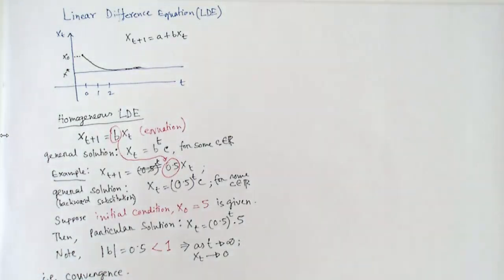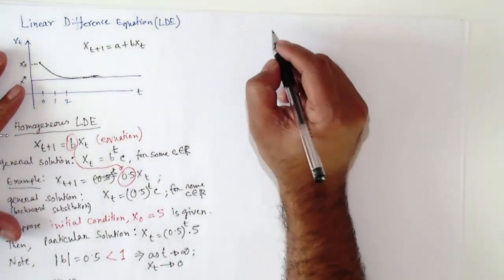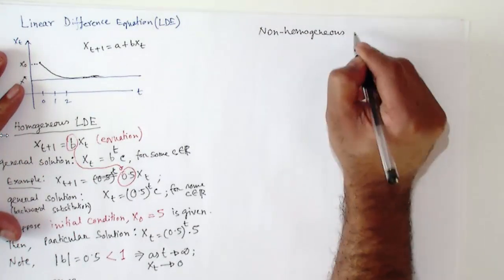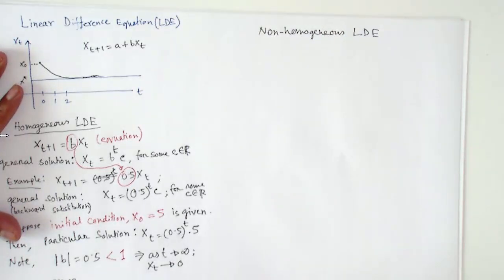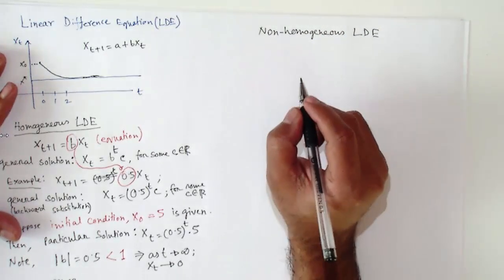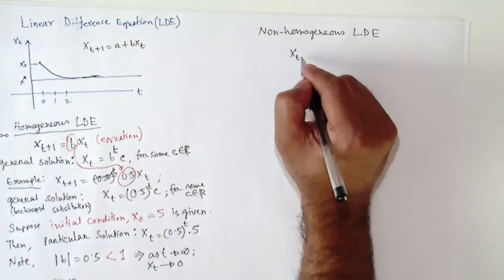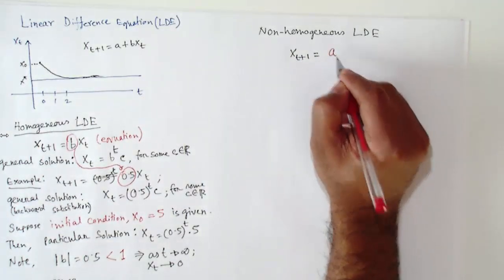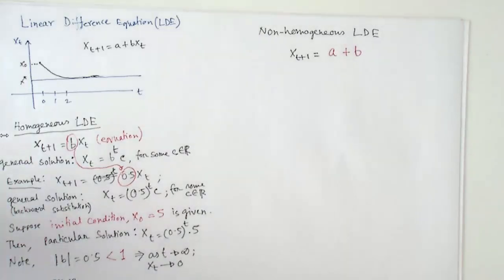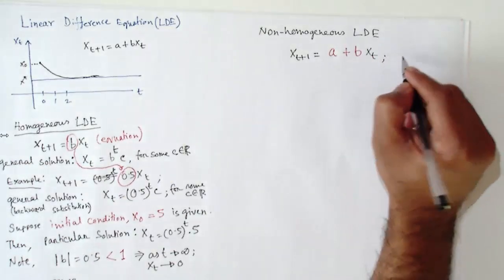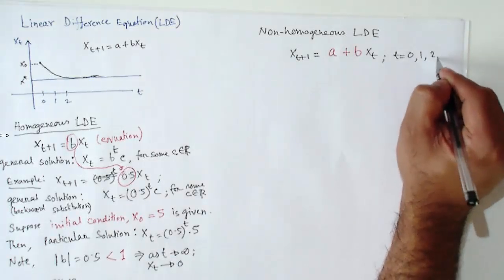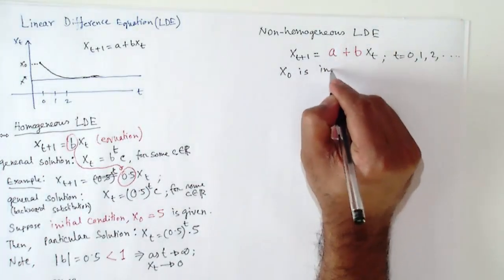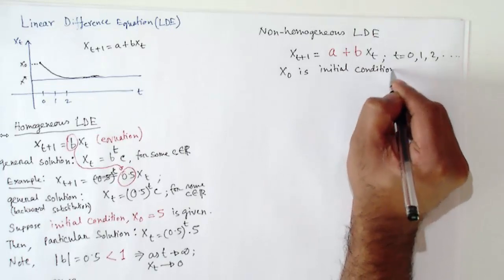Now we move to the second type: the non-homogeneous or inhomogeneous linear difference equation. The general form is x_{t+1} equals a plus b*x_t, for t equals 0, 1, 2. These are for discrete time. Suppose x_0 is the initial condition.